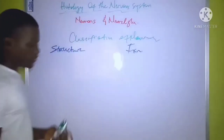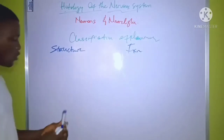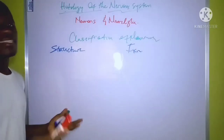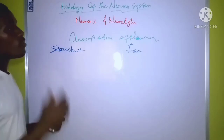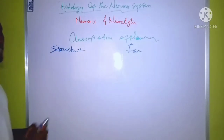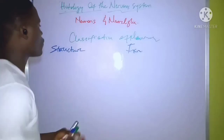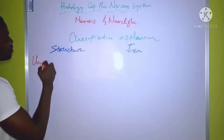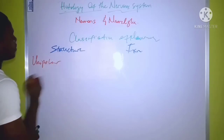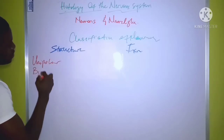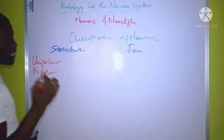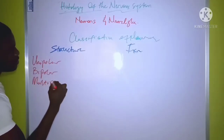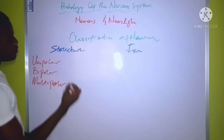The classification of neurons according to their structure is due to the number of fibers that extend from the cell body. There are three classifications of neurons based on structure: the first is the unipolar neuron, the second is the bipolar neuron, and lastly we have the multipolar neuron.